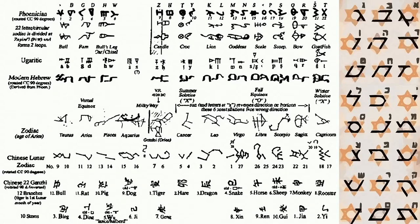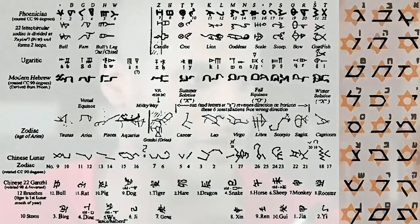When you put all of those words together, they create a specific symbol — in this case, the Magen Star, which is very ancient. So now we're starting to see the connection within all of this.